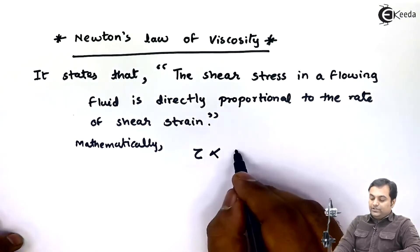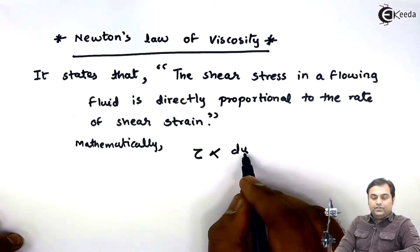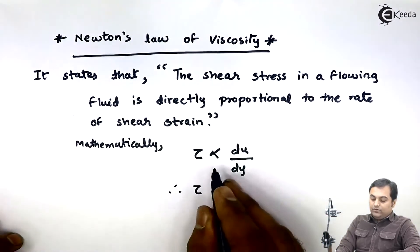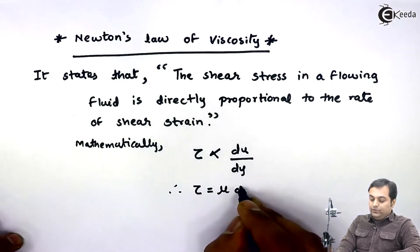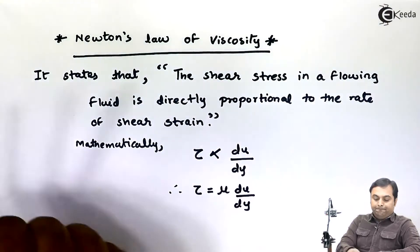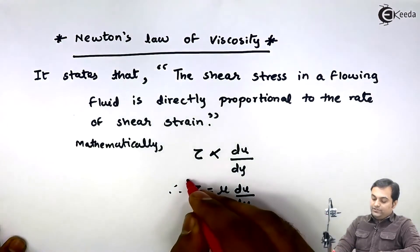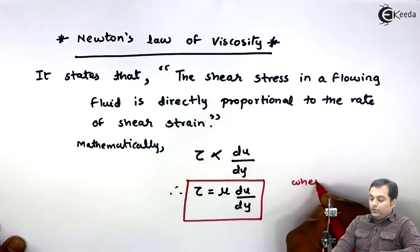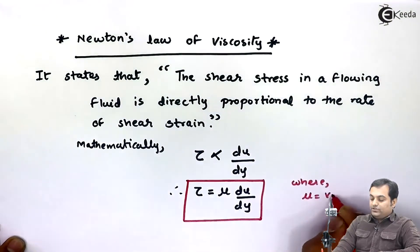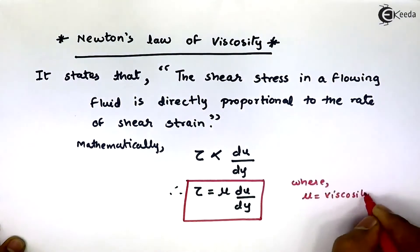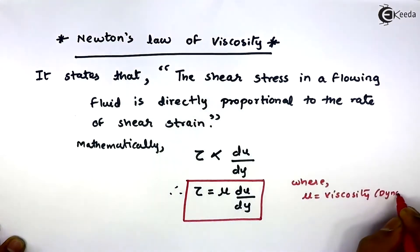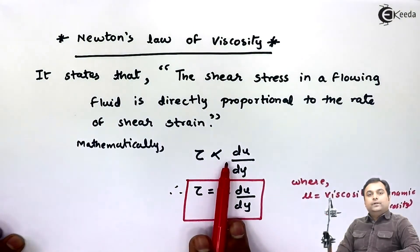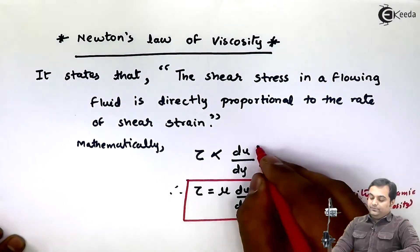Mathematically, shear stress is denoted by tau (τ) and it is directly proportional to the rate of shear strain, which is du/dy — the change in velocity du upon the change in distance dy. Replacing the proportionality constant, we get τ = μ(du/dy), where mu (μ) is called viscosity or dynamic viscosity.